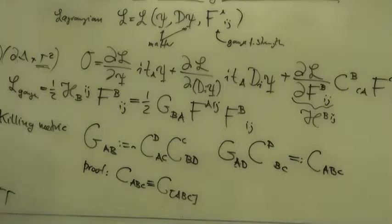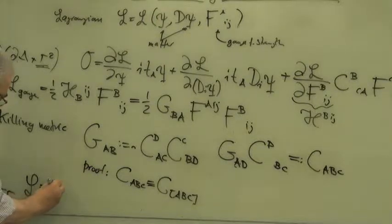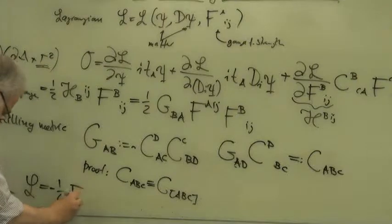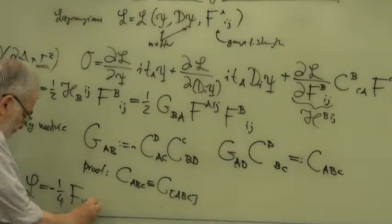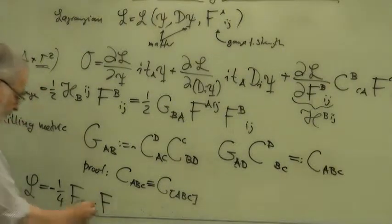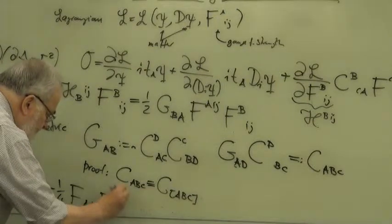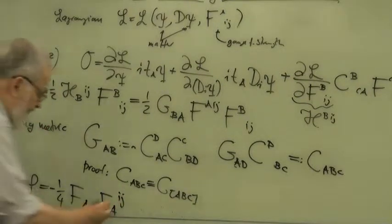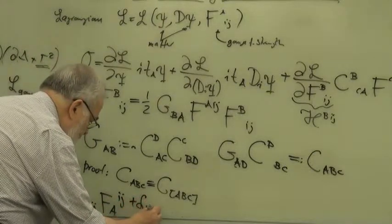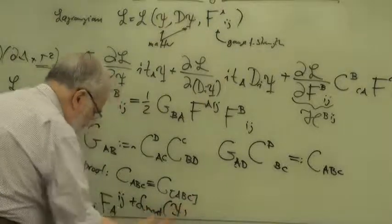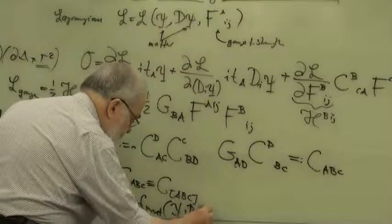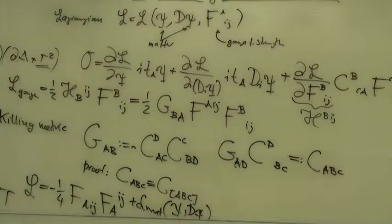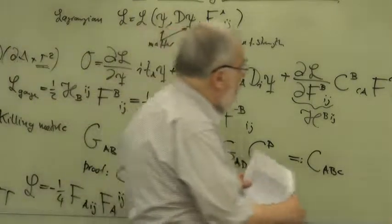Okay, so by suitably rescaling the metric, the Killing metric, you will scale it to one, and then, as it is said, you have then Lagrangian L is equal to minus one-fourth times Faij times Faij. This is the kinetic term, and the kinetic term plus matter Lagrangian, which depends on the psi and on the first-order covariant derivatives of psi. So we have now split the Lagrangian into the gauge field part and the matter field part, and you get the field equations.